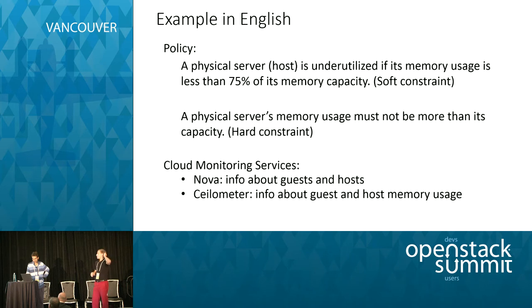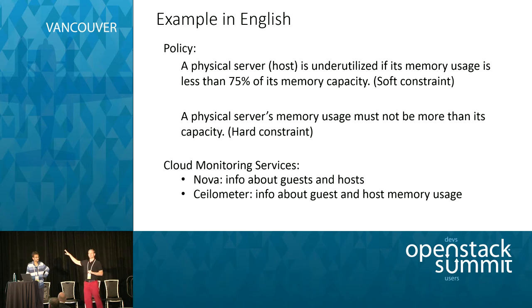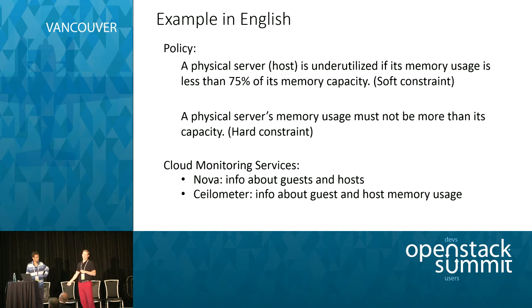We have another intro to Congress tomorrow. Let me give you an example of the kind of policy we can write in Congress drawn from the NFV energy consumption domain. The first policy statement is about server utilization: we want the memory utilization of every server to be at least 75% of its capacity — a lower bound on memory utilization, and this is going to be a soft constraint. The second statement is that a physical server's memory usage must not exceed its capacity — this is going to be a hard constraint, one we never want to violate.